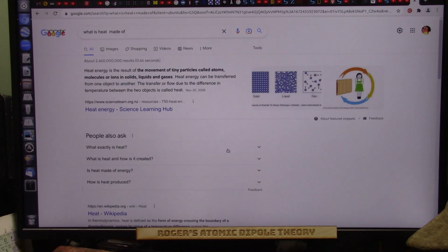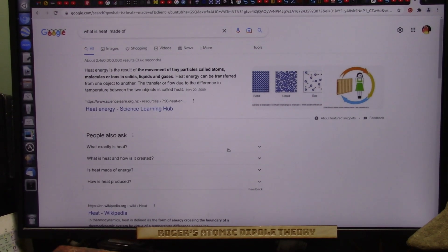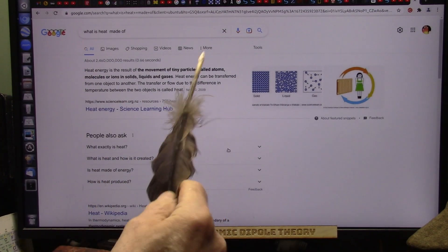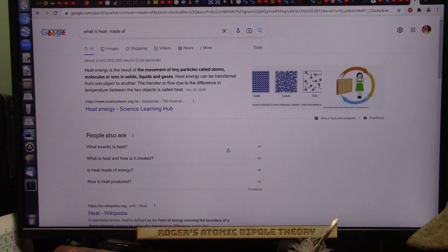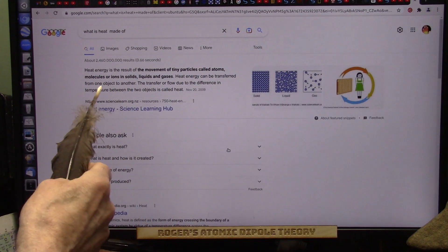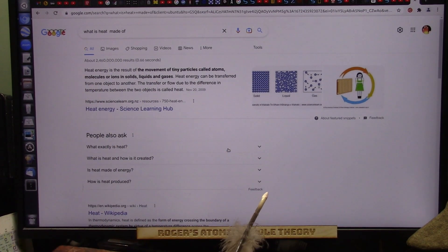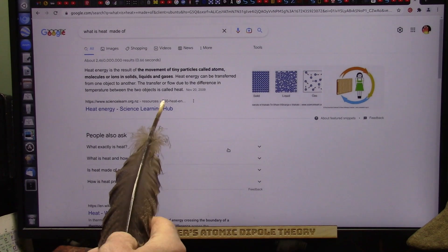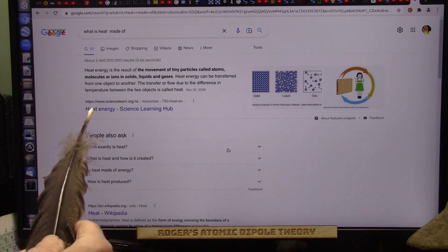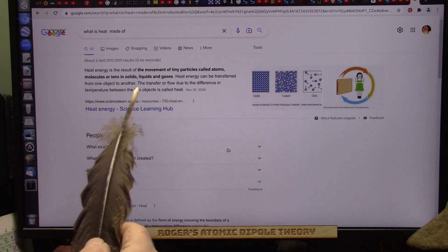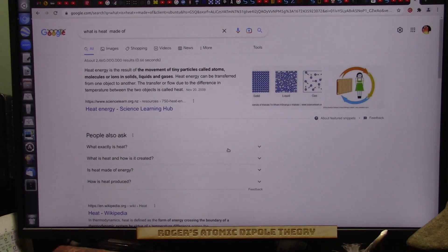Okay my friends, this is going to be extremely short. What is heat made of? What is cold made of? Here's what they say about heat. Heat energy is a result of the movement of tiny particles called atoms, and heat energy can be transferred from one object to another. Do atoms move from one to the other? No, they do not.